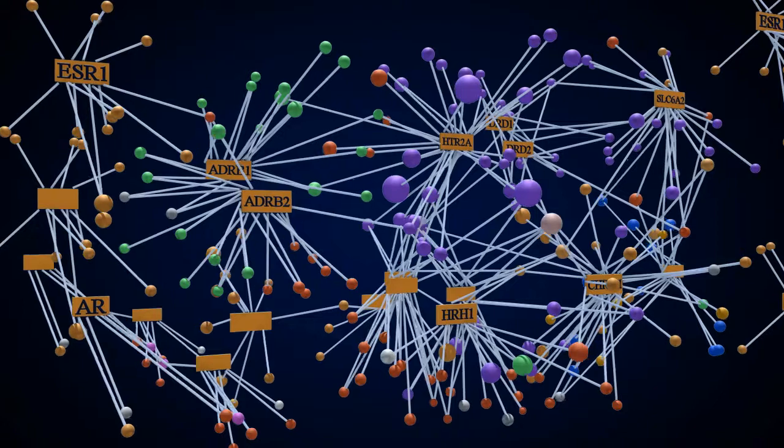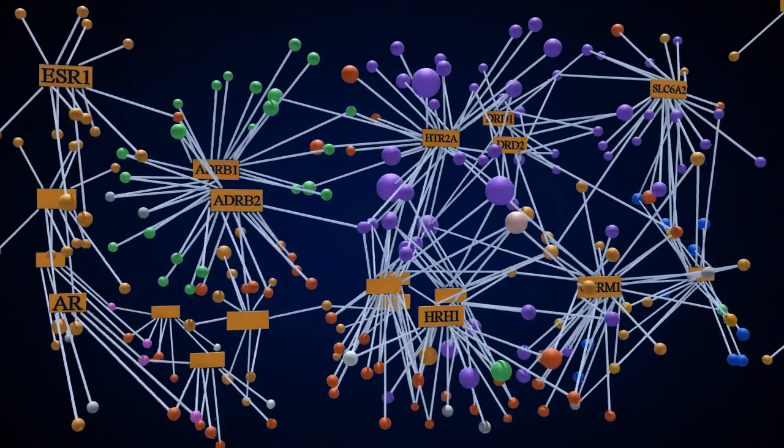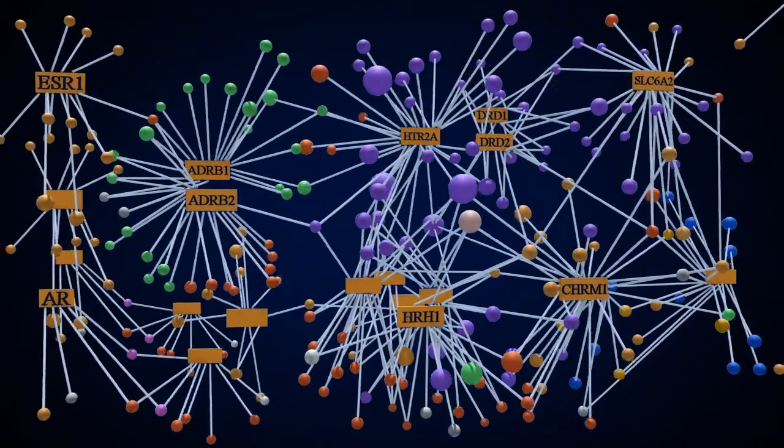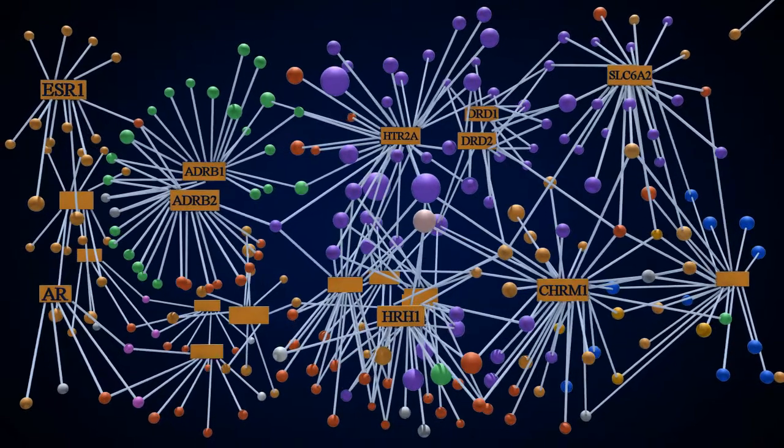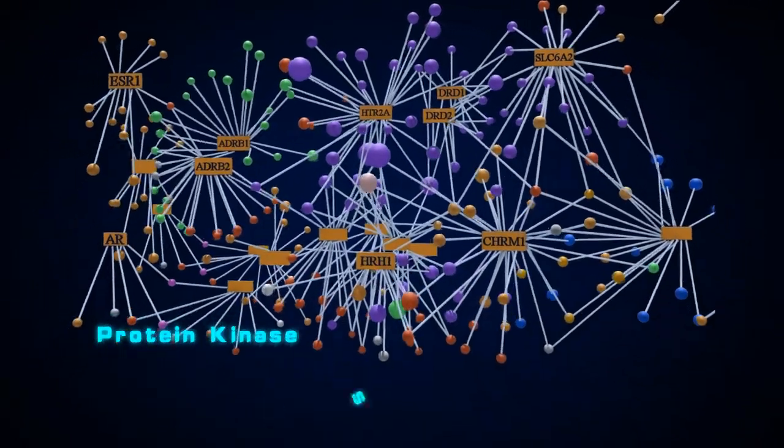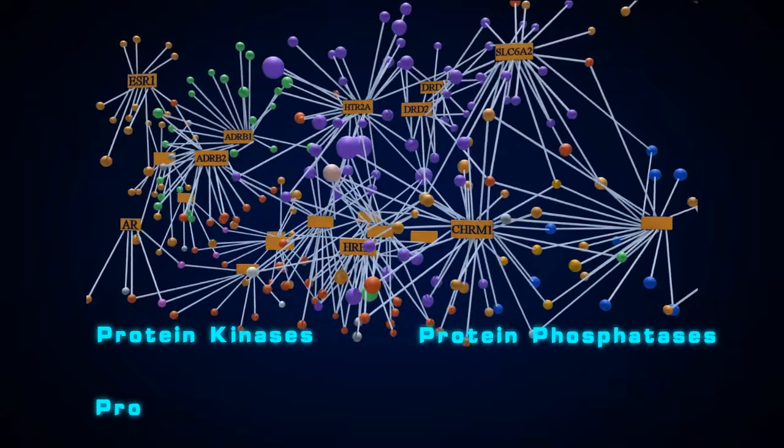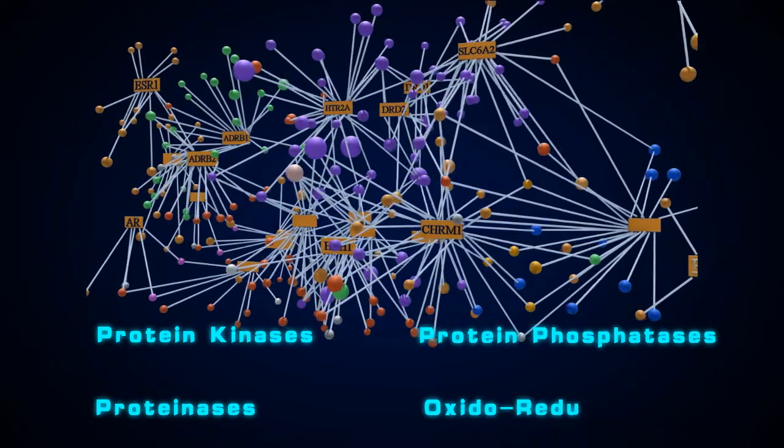Hundreds of functional proteins can be separated and functionally assayed to generate a comprehensive three-dimensional landscape of protein families, such as protein kinases, phosphatases, proteinases, and oxidoreductases.